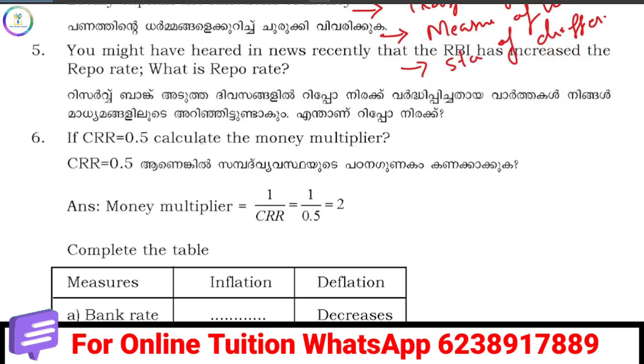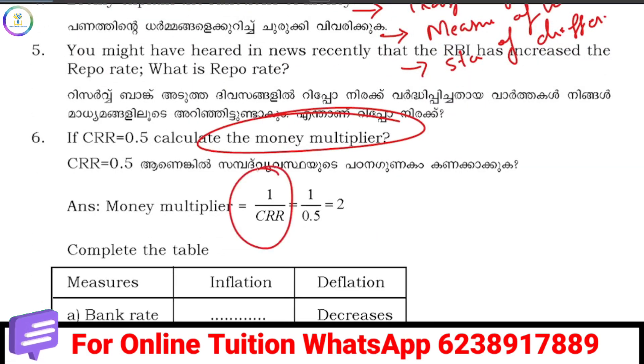CRR is 0.5. The money multiplier is 1 divided by CRR. So 1 divided by 0.5 equals 2 — that is a money multiplier of 2.